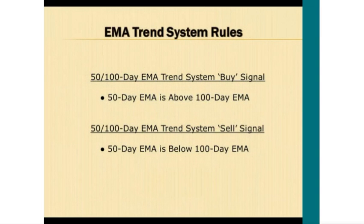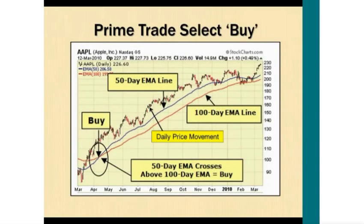Our trend system rules are: if the 50-day exponential moving average is above the 100-day exponential moving average, that stock or ETF is on a buy signal. If the 50-day EMA is below the 100-day EMA, that stock or ETF is on a sell signal. Here's an example of a buy signal — in April, the 50-day EMA crossed above the 100-day EMA, and Apple stock was on a buy point right there. As long as that 50-day EMA remains above the 100-day, Apple stock is on a buy signal.